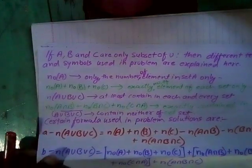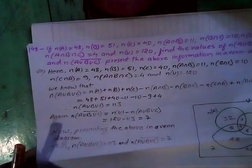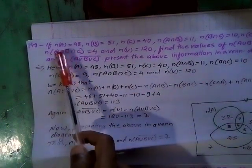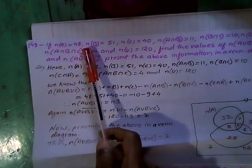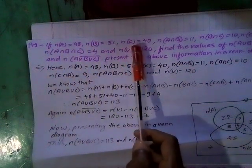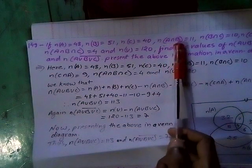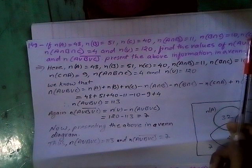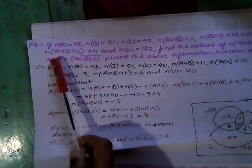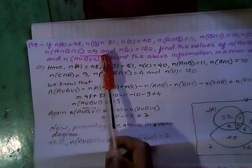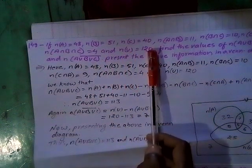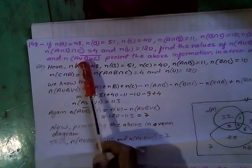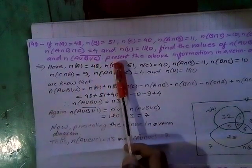Next problem: Question number 149. Given N A equals 48, N B equals 51, N C equals 40, N A intersection B equals 11, N B intersection C equals 10, N C intersection A equals 9, N A intersection B intersection C equals 4, and N U equals 120. Find N A union B union C and N A union B union C complement, and present the information in a Venn diagram.